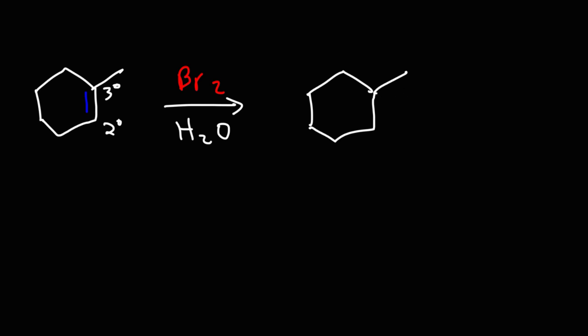Now, for this particular molecule, stereochemistry is important. This reaction proceeds with anti-addition. That means that the OH and the bromine atom are on opposite sides. So if you place the OH group on the front, the bromine atom will be in the back.